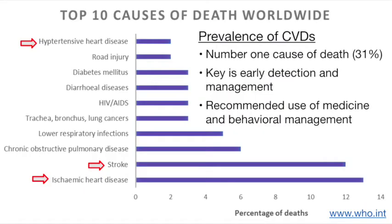Depicted as the top 10 causes of death according to the World Health Organization, three of the causes are cardiovascular, two of which — stroke and ischemic heart disease — generate the highest percentage of deaths at 12 and 13 percent. Cardiovascular disease is the number one cause of death globally. More people die annually from cardiovascular causes than any other cause. In 2012, an estimated 17.5 million people died, which is 31 percent of global deaths. 7.4 million were due to coronary heart disease, and 6.7 million were due to stroke.